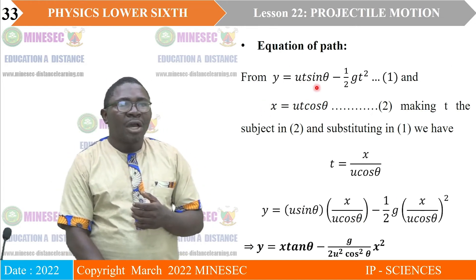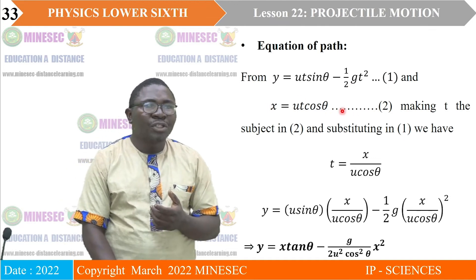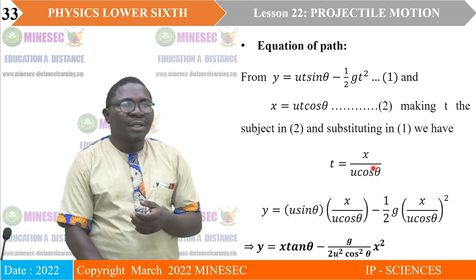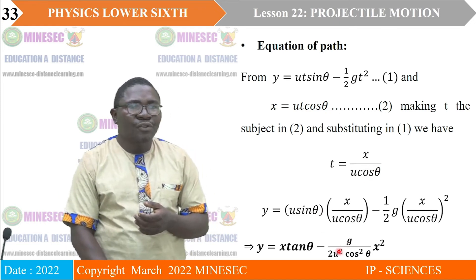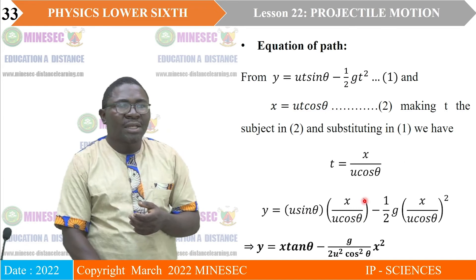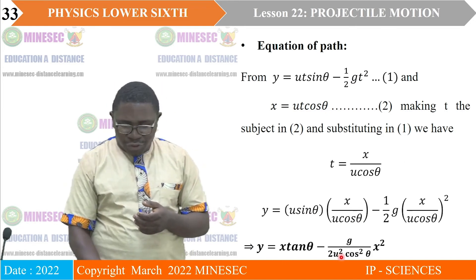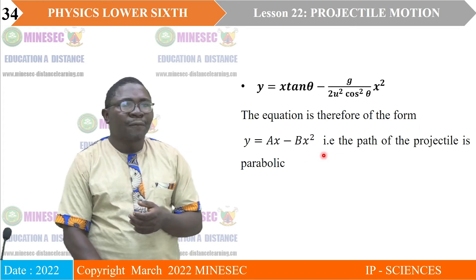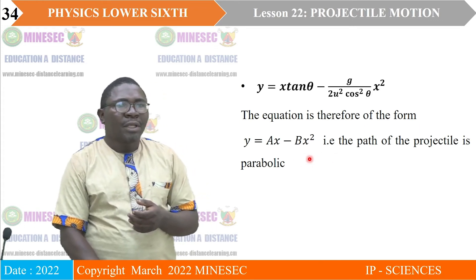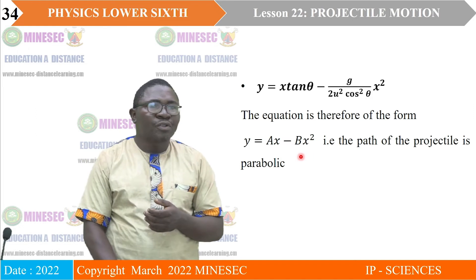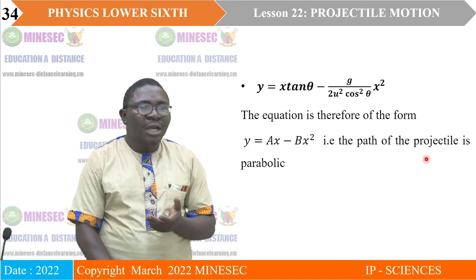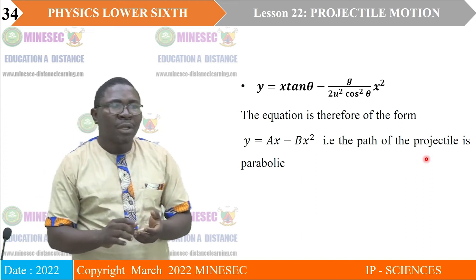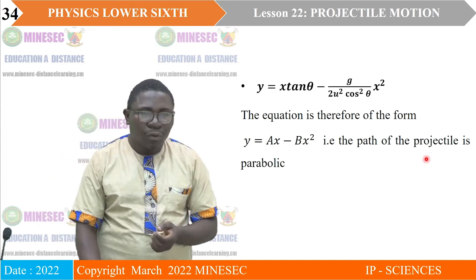For the equation of path: using the horizontal and vertical equations, making t the subject in the horizontal equation and substituting into the vertical equation, we obtain an equation of the form y equals ax plus dx squared — which is the equation of a parabola. So the motion of an object projected at an angle is also parabolic.